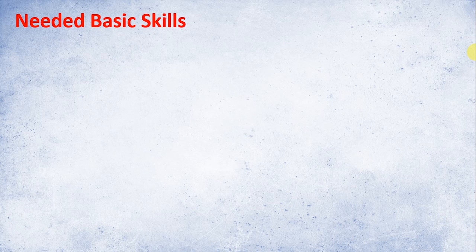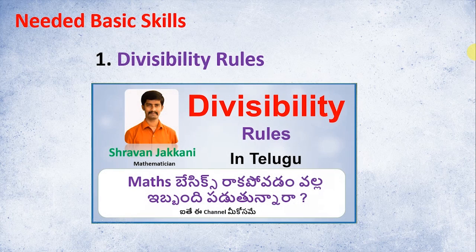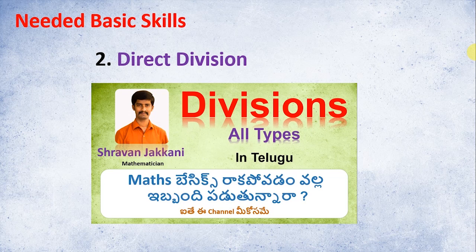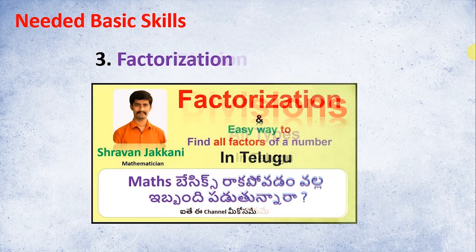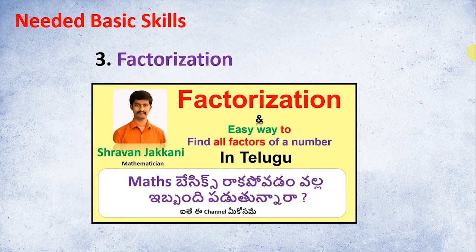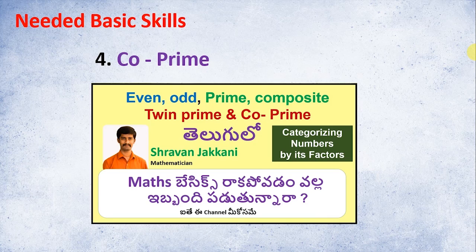First, we have some basic skills that we should know. The first is Divisibility Rules. If you can simplify a fraction, you can use divisibility rules to understand how to divide fractions. Next is Factorization — all types of factorization will be explained in the factorization video. You can also simplify fractions using co-primes, where the numerator and denominator share no common factors. This video will explain everything very clearly.